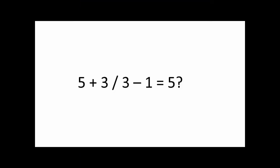What happened? Here, the calculator, again, simply followed the order of operations. When the calculator sees 5 plus 3 divided by 3 minus 1, it will do the division first. 3 divided by 3, which is 1. And then it will do the addition and subtraction. And 5 plus 1 minus 1 equals 5.